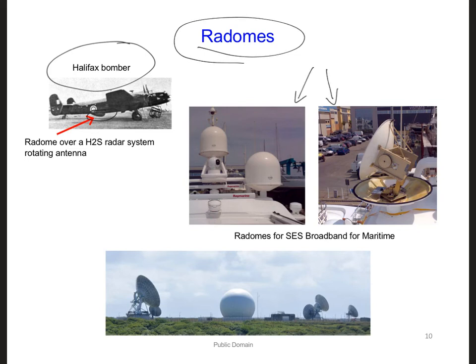These two pictures here show a couple radomes on a yacht here for SES broadband for maritime, which provides two-way satellite broadband internet service to private boats and commercial ships. And the one on the right here shows the antenna when the radome has been removed. And then here on the bottom, if you ever see something like this, where some of the antennas are covered by a radome, like this one, and some of them are not.